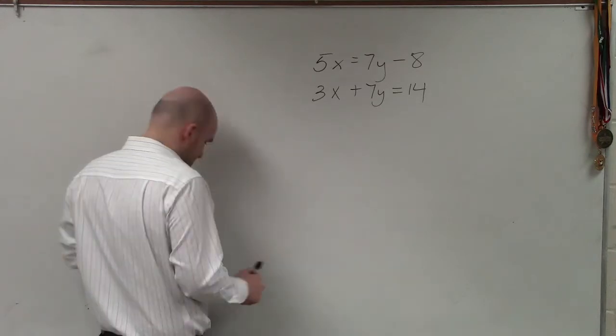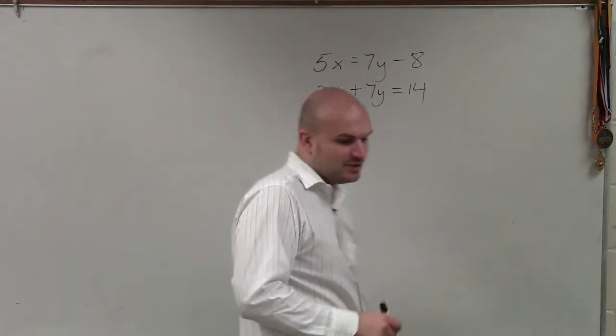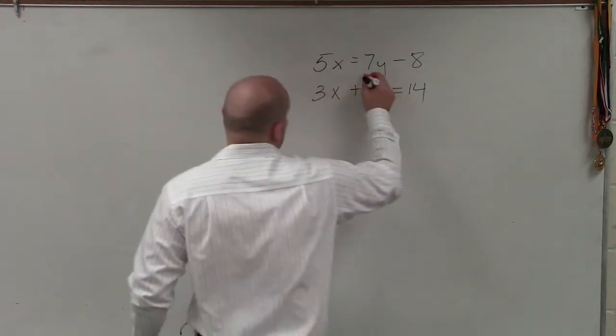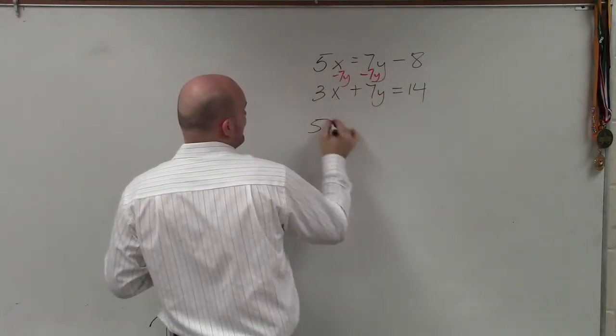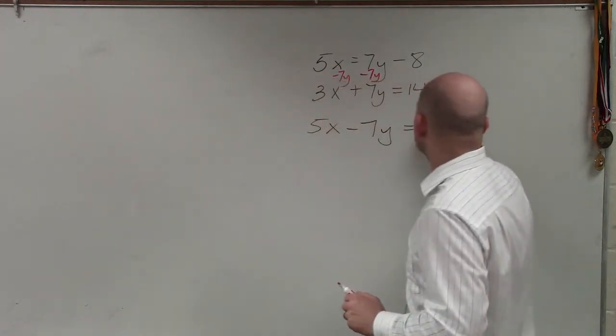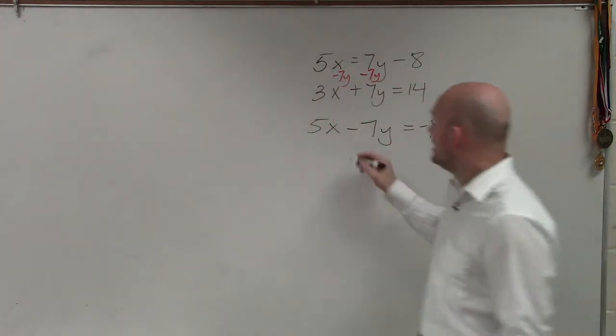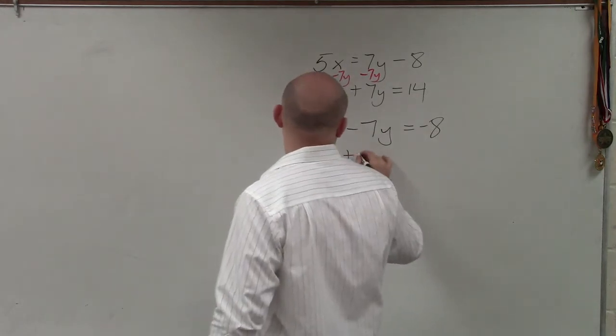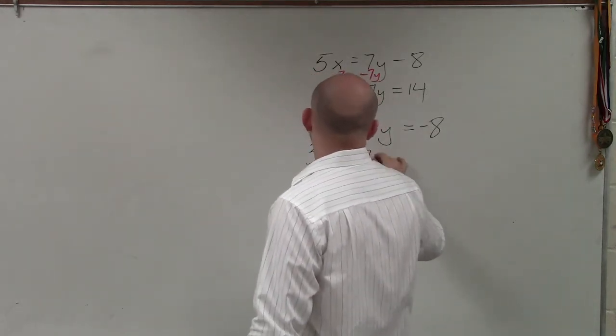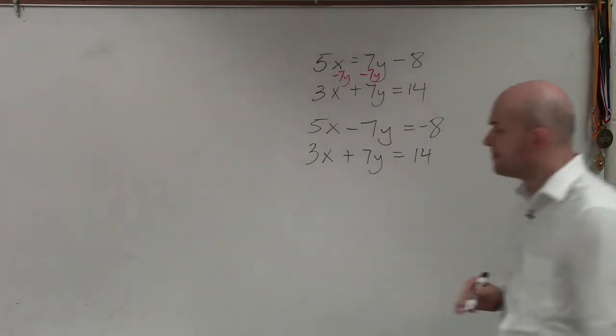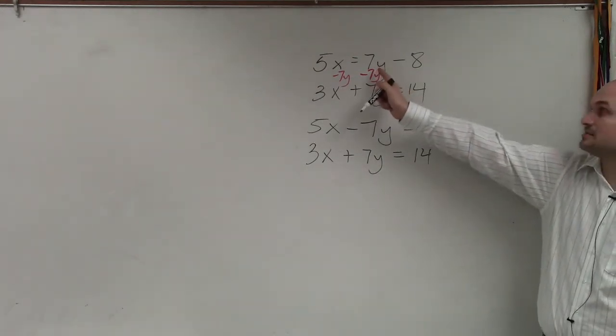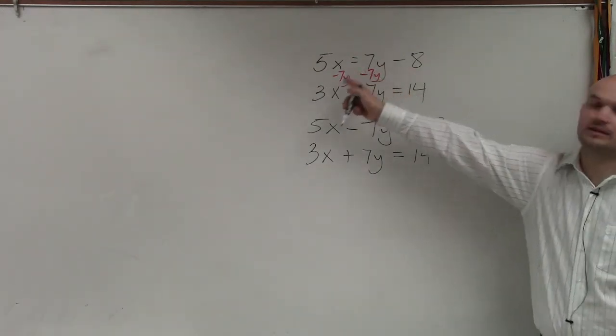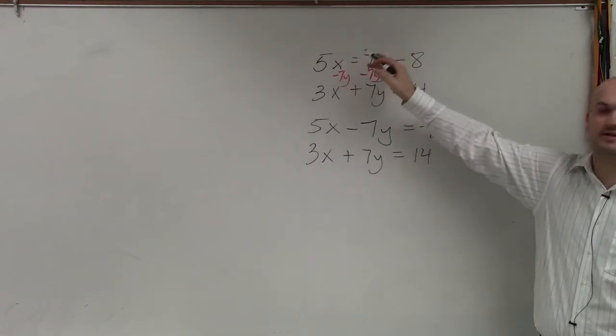So first thing I'm going to need to do is I'm going to need to align my variables. So I will subtract 7y on both sides. So now I have 5x minus 7y equals negative 8, and I have 3x plus 7y equals 14. Where did you subtract 7y from? There's 7y on the right side. So I subtracted 7y on the right side. I just worked on the top equation all by itself.